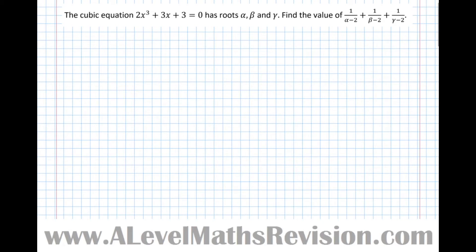So let's have a look at this question here. It says the cubic equation 2x³ + 3x + 3 = 0 has roots alpha, beta and gamma. Find the value of 1/(alpha - 2) + 1/(beta - 2) + 1/(gamma - 2).